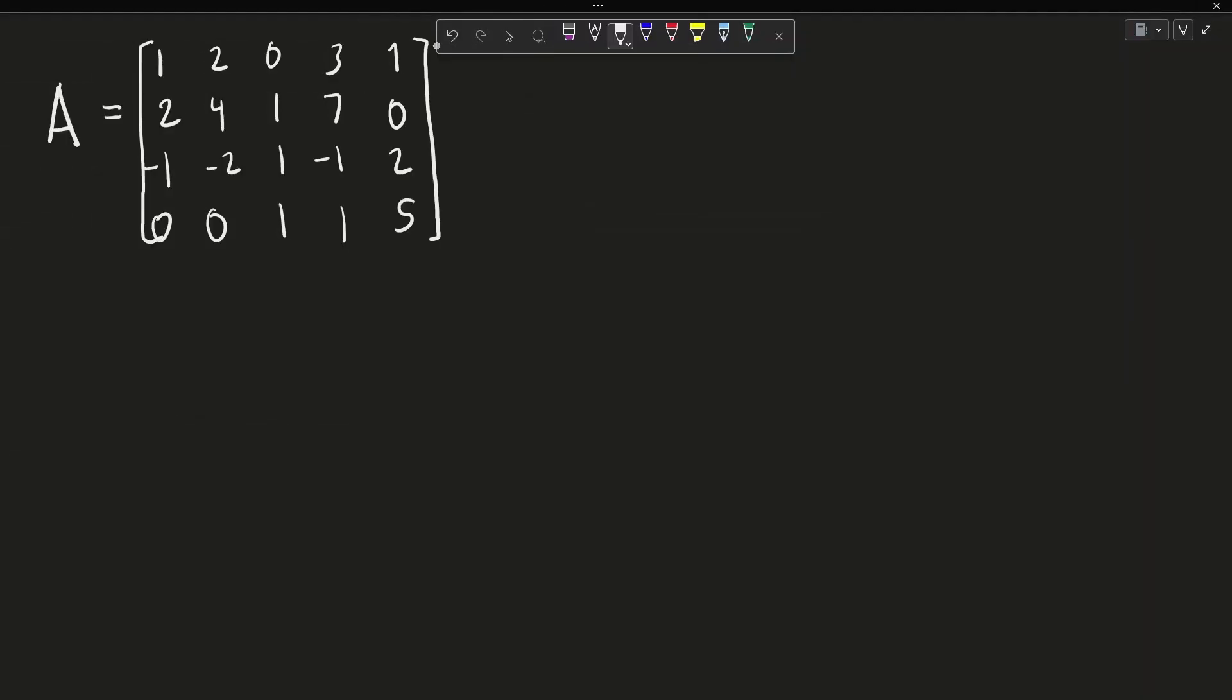Let's say we have the matrix A, which is a 4 by 5 matrix. Our first step would be to reduce this into row echelon form. If you'd like to attempt to solve this by yourself, you can pause the video here before I reveal the row echelon form of this matrix.